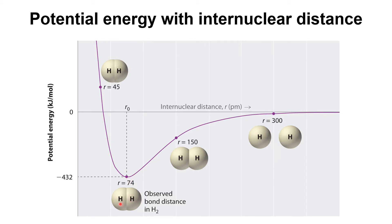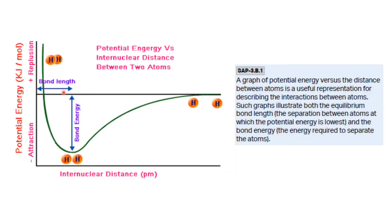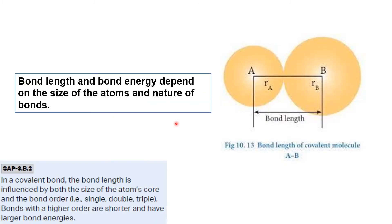When the internuclear distance decreases further below 74 pm, repulsion between both nuclei starts, and the potential energy increases. The point where potential energy is minimum — at 74 pm and -432 kJ/mol — is where the hydrogen molecule is most stable. The internuclear distance at minimum potential energy is called the bond length, and that minimum energy value is called the bond energy or bond enthalpy.